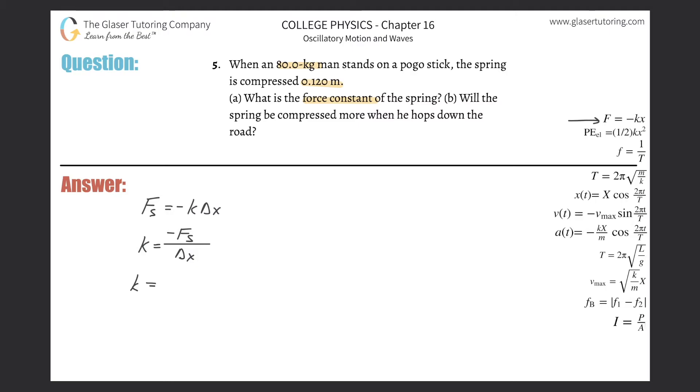So this is then equal to, instead of force of the spring, I can plug in the mass of the man times gravity, because that's essentially the weight of the person. So the mass of the man multiplied by gravity, then divided by the change in displacement of that spring.